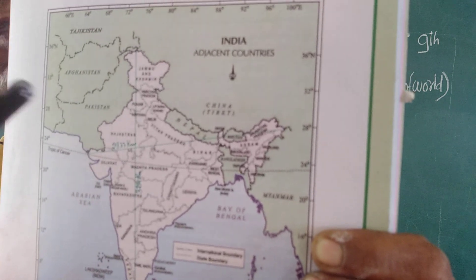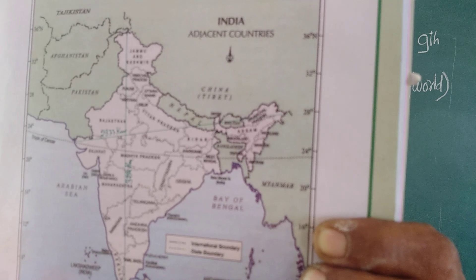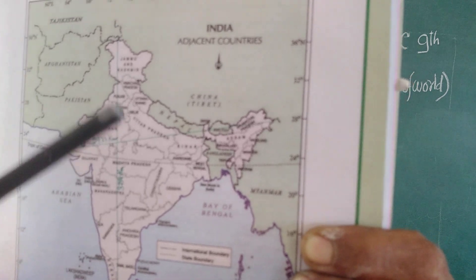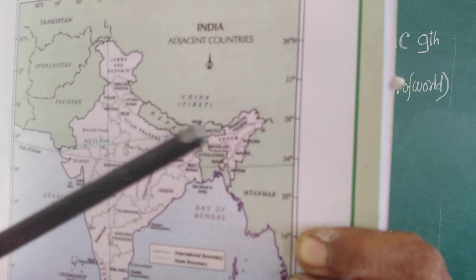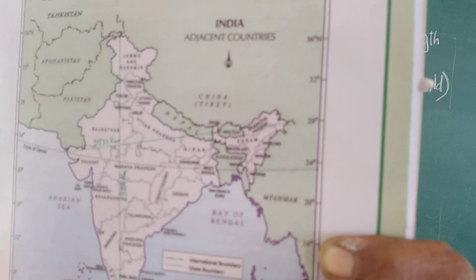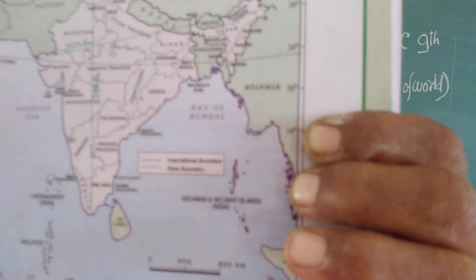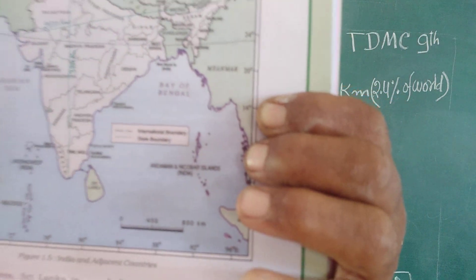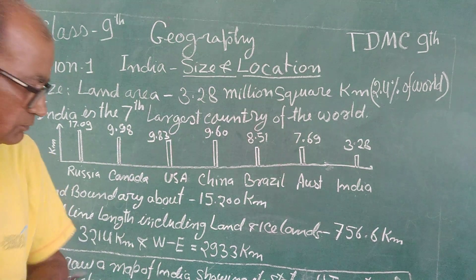So today we have covered the size of India, the surrounding countries, and the total land area. We have shown the full map and explained the surrounding countries.